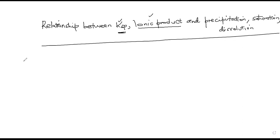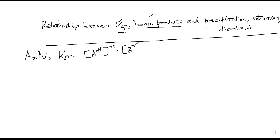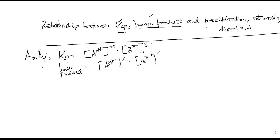Consider a sparingly soluble salt AₓBᵧ. The Ksp of this sparingly soluble salt equals the concentration of ion A raised to the power x, times the concentration of B⁻ raised to the power y. The ionic product has the same expression: the concentration of ion A raised to the power x times the concentration of B raised to the power y.